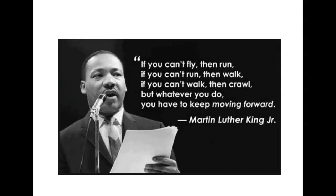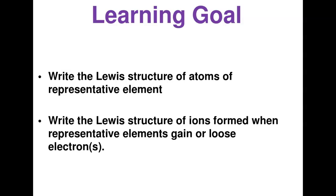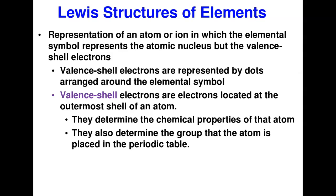Our learning goals today: one, we're going to know how to write the Lewis structure of atoms of representative elements, and two, we'll write the Lewis structure of ions formed when representative elements gain or lose electrons. Those are the two important objectives we will be covering in this class.